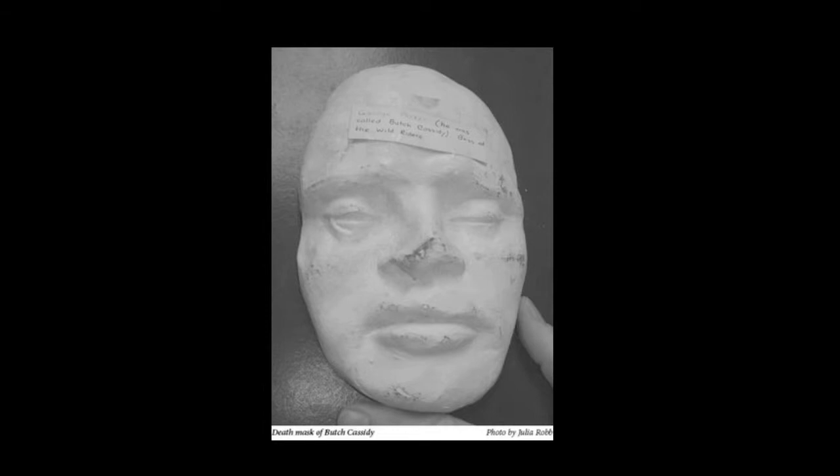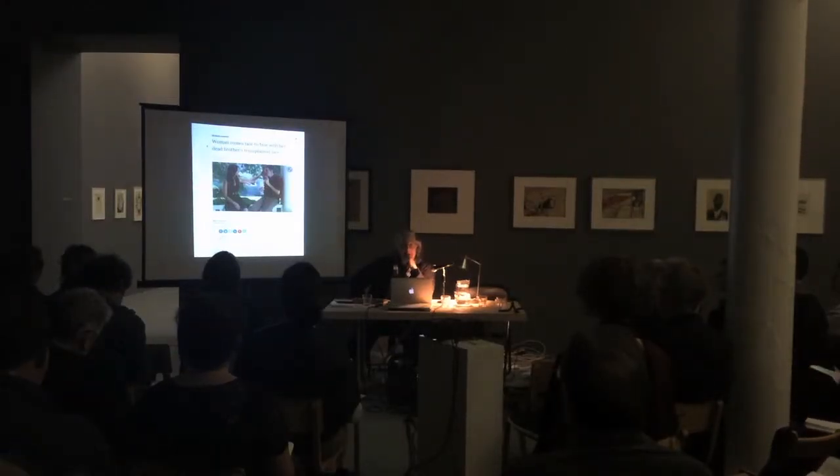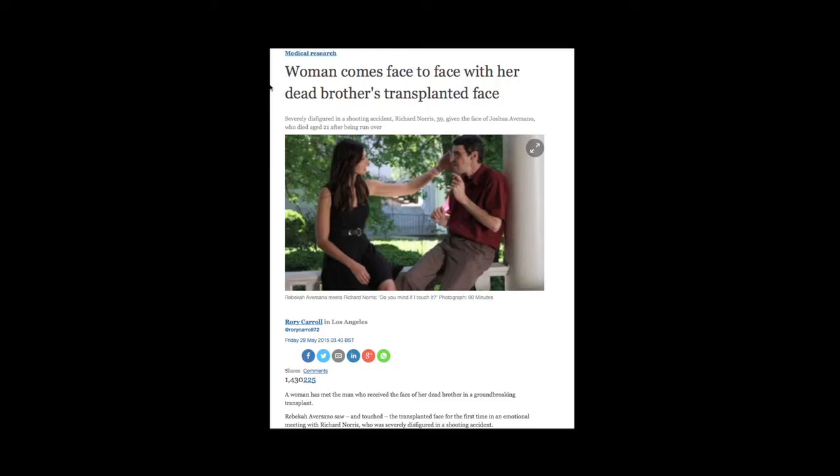One can see that emptying in the death mask as a model of the portrait. This is the death mask of Butch Cassidy, where what is withdrawn from the portrait is life itself. I was intrigued to see in the Guardian an article: 'woman comes face to face with her dead brother's transplanted face.' The face was transplanted onto a man who had destroyed his face in a gun accident. Does that man become a kind of living portrait of her brother? This introduces the question of the portrait's relation to the withdrawal of life and death.